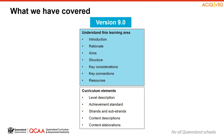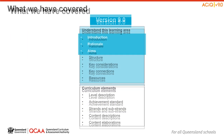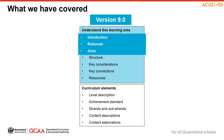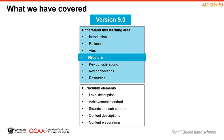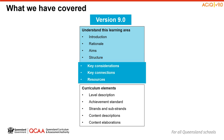Here is the summary of the sections of the curriculum we have covered in the first session. We have considered the intent of the curriculum by reviewing the introduction, rationale and aims. Next, we examined the structural changes for English by reviewing the strands and sub-strands. And finally, we reflected on some new elements to the curriculum by reviewing the key considerations, key connections and resources associated with English.